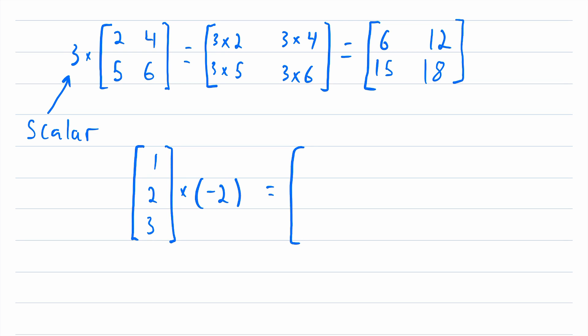So this is going to give us one times negative two, which will be negative two, two times negative two, which will be negative four, and three times negative two, which will be negative six.